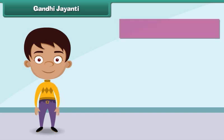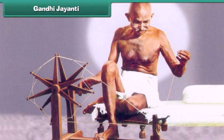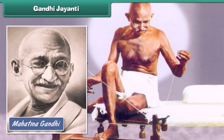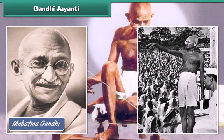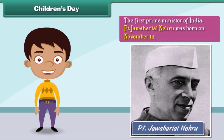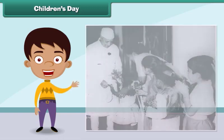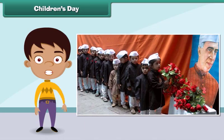We celebrate Gandhi Jayanti on October 2 every year. The day marks the birth anniversary of Mahatma Gandhi, the Father of our Nation, who played an important role in getting India independence from the British. Children's Day is celebrated on November 14, the birthday of the first Prime Minister of India, Pandit Jawaharlal Nehru. He was very fond of children, who affectionately called him Chacha Nehru, and his birth anniversary is celebrated as Children's Day to commemorate his love for children.